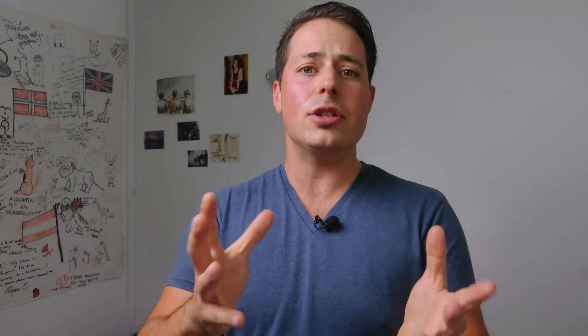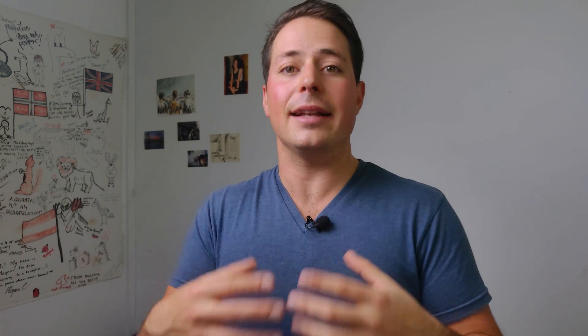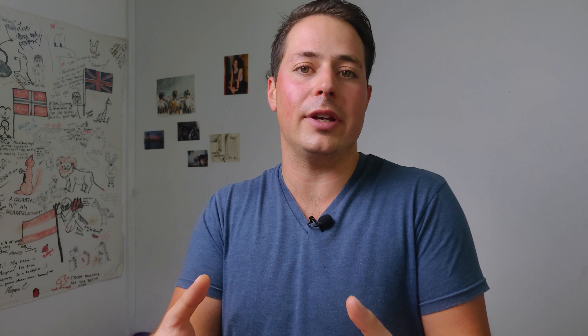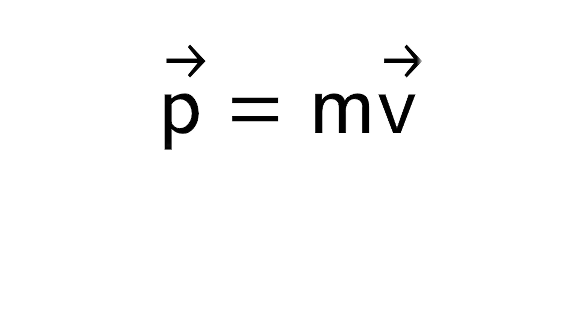Wait a minute! Right, I forgot to tell you what momentum is. Momentum can be thought of as the tendency of an object to keep moving the way it's already moving. Momentum, p for some reason, is mass times velocity. It is a vector quantity so we put an arrow on top of it to indicate it has direction.